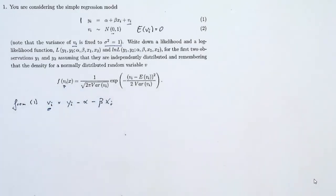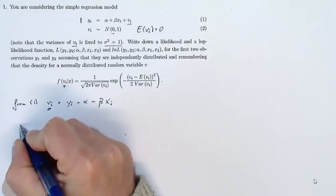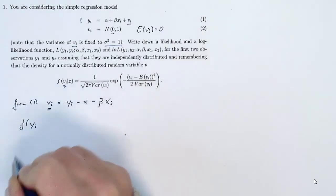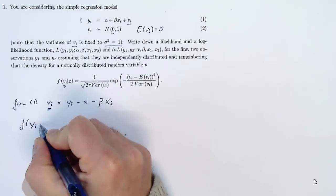yi is normally distributed, and what you see here is the density of the normal distribution. It involves the expected value of vi and the variance of vi, so with this information we can actually write down a density for yi.